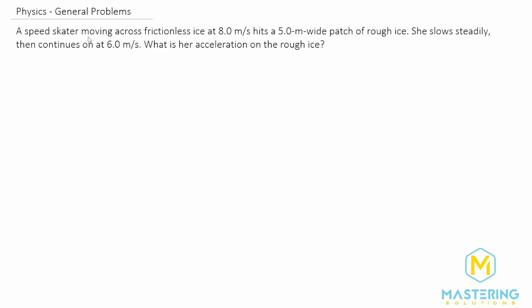They say that a speed skater is moving along frictionless ice at this speed, and then the person hits a five meter wide patch of rough ice and then she slows and then continues on at a slower speed. So what is the acceleration on the ice?